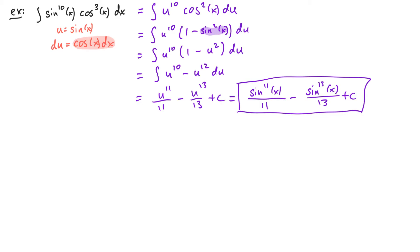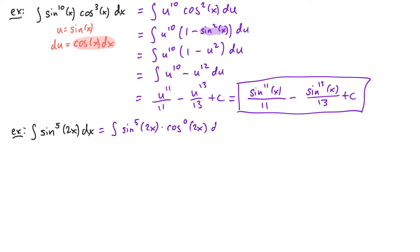Let's look at one last example: the integral of sine of 2x to the fifth power dx. Even though there's not a cosine here we can think about this as sine of 2x to the fifth power times cosine of 2x to the zeroth power. You'll notice that there's a 2x inside of the trig functions rather than just x, but we're going to approach it the same way. The sine function is the one with the odd power, so our substitution is going to be u equals cosine of 2x.